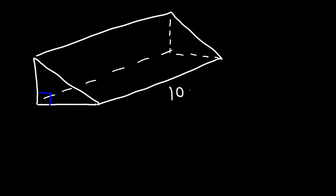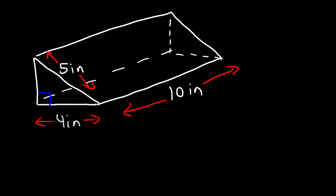Now let's work on another example. So let's say the height of the prism in this example is 10 inches, the base of the triangle is 4 inches, and the hypotenuse is 5 inches. Go ahead and calculate the volume of the triangular prism. So once again we need to calculate the area of the base first.